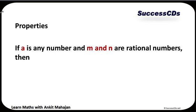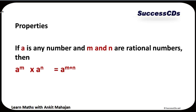Now let's start with some fundamental properties of exponents. If a is any number and m and n are rational numbers, then the first property is the multiplicative property: a raised to the power m, into a raised to the power n, becomes a raised to the power m plus n. Remember, when the bases are the same, powers must always be added.